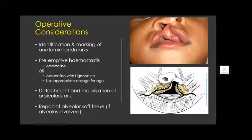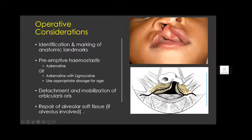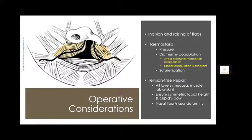When the alveolus is affected, I will routinely repair the alveolar soft tissue. I have found that if alveolar soft tissue is repaired at the time of primary cleft lip repair, some patients may not need any alveolar bone graft down the line. However, some surgeons leave the alveolus alone and have the child undergo an alveolar bone graft later. Having raised flaps — and the lip bleeds a lot — in addition to adrenaline, digital pressure alone controls most bleeding. We should as much as possible avoid extensive monopolar diathermy coagulation; if bipolar forceps are available, that is excellent for controlling bleeding.